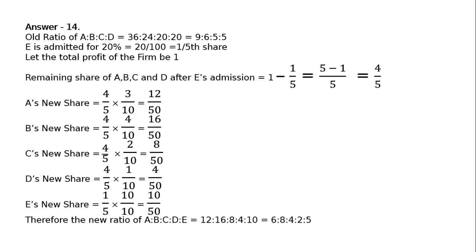Therefore, the new ratio of A:B:C:D:E is equal to 12:16:8:4:10, that is equal to 6:8:4:2:5. This is the final answer.